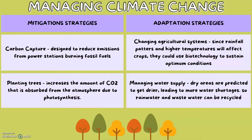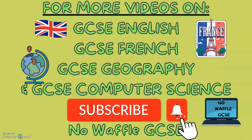Another adaptation strategy is to manage water supplies. Dry areas are predicted to get drier, leading to more water shortages, so rainwater and wastewater should be recycled. For more videos on GCSE English, French, Geography, Computer Science and many more, subscribe to Knowable for GCSE. Thank you for watching and see you soon.